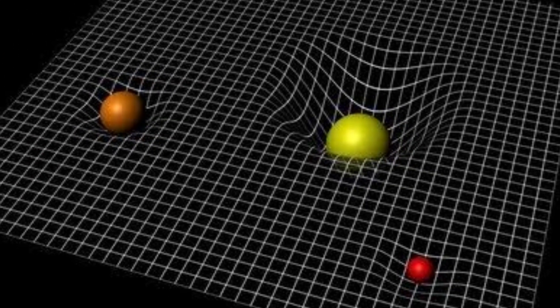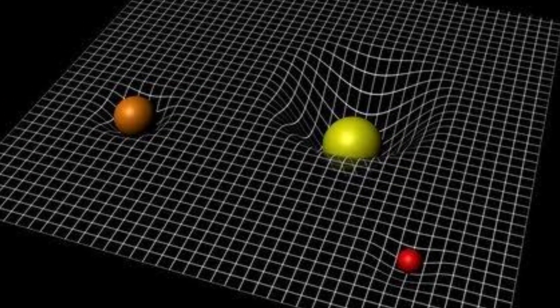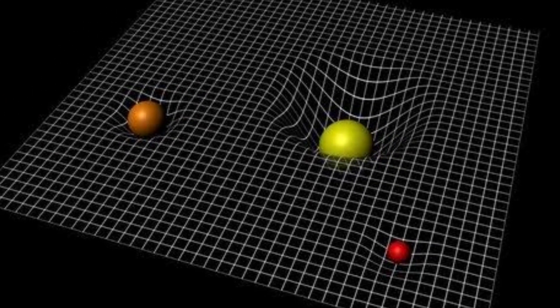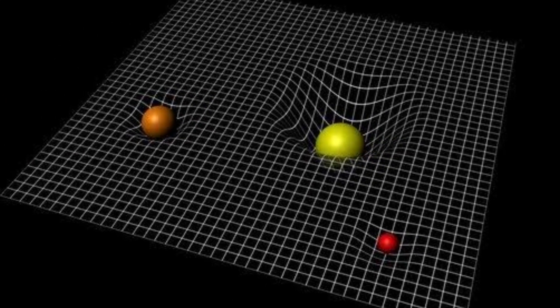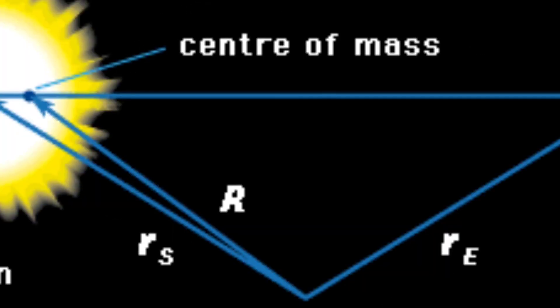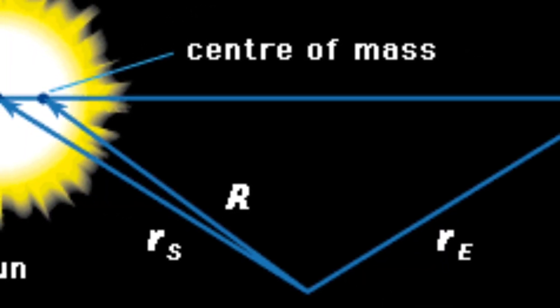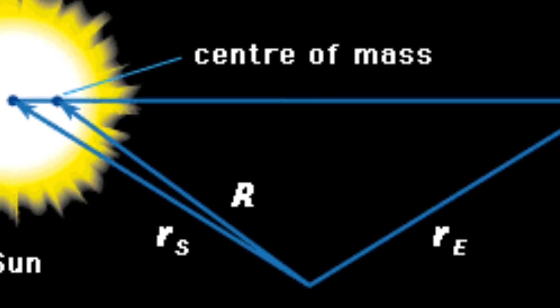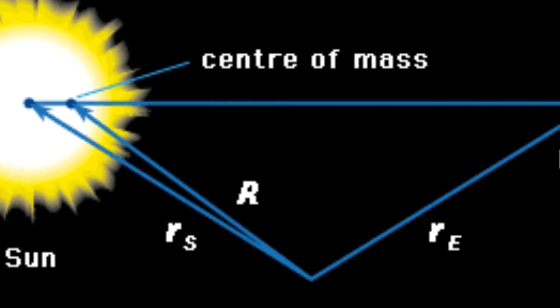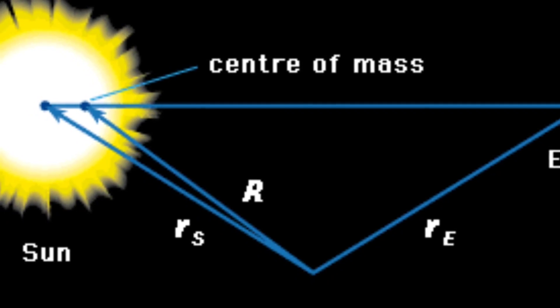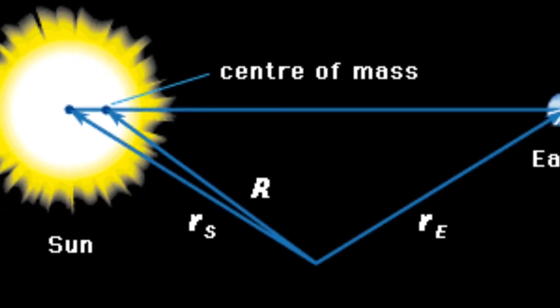It's important to note that the bending of light by gravity is a minuscule effect and is more pronounced when the light passes close to extremely massive objects. This is why phenomena like gravitational lensing occur, where the path of light from distant galaxies is bent by massive galaxy clusters, creating distorted and magnified images.